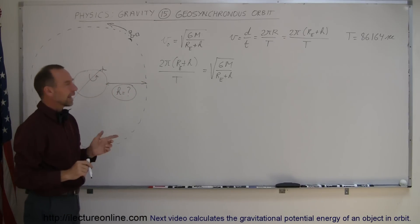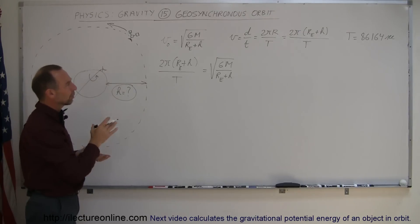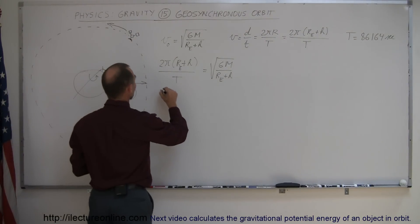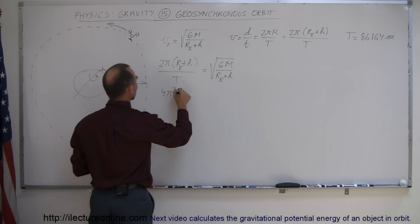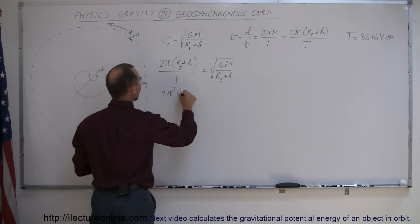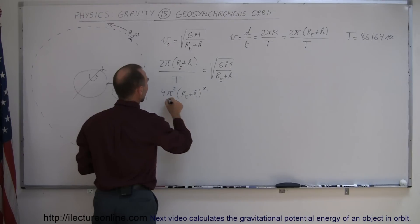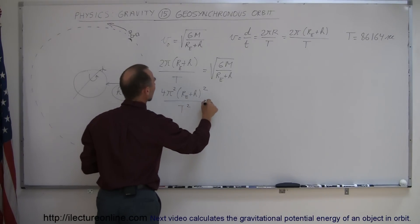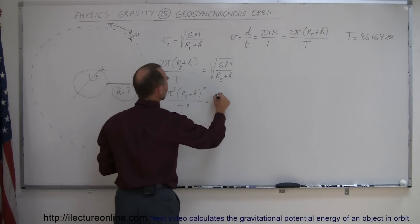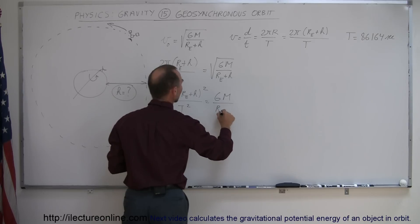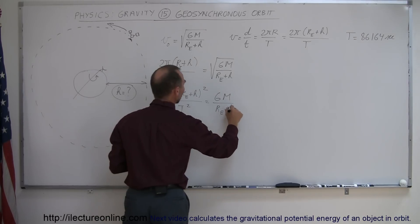We're solving for h, so first we need to get rid of the radical by squaring both sides. When we square both sides, we have 4π² times the quantity (radius of the earth plus h) squared, divided by the period squared, equal to GM divided by (radius of the earth plus h).